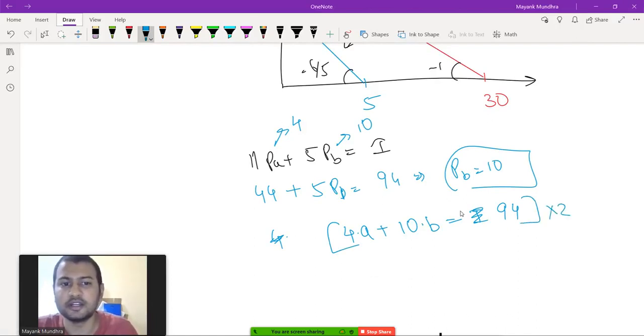If I multiply the entire equation by 2, it does not change, right? It is the same equation. So 8 times A plus 20 times B equals 188.